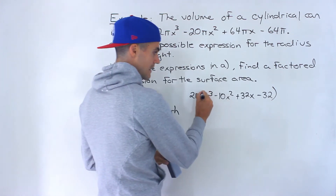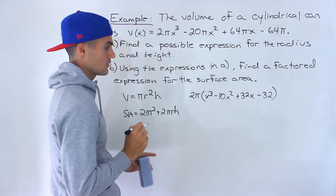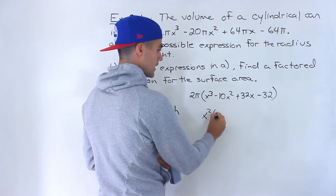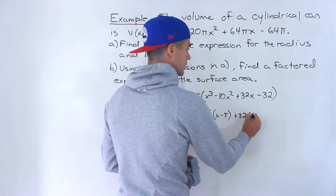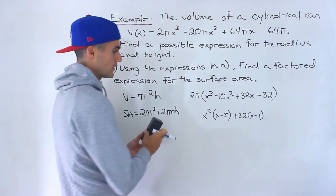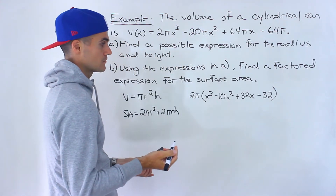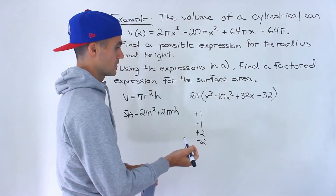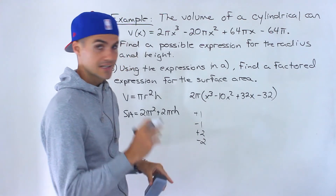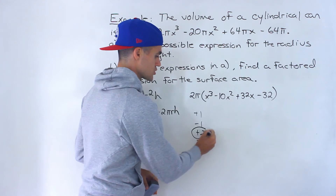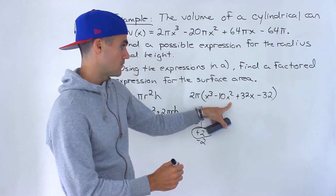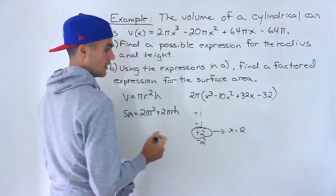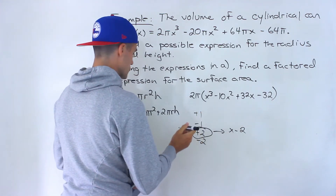Now we want to factor this bracket. We can't take out more constants, and grouping doesn't work — taking x² from the first two gives (x-5) and taking 32 from the last two gives (x-1), and those brackets aren't the same. So we'll use the factor theorem, plugging in ±1, ±2, etc. Trying x = 2 makes the bracket equal 0, so by the factor theorem, (x - 2) is a factor.